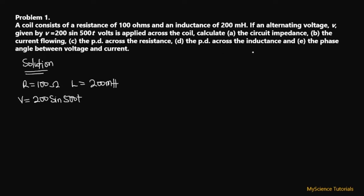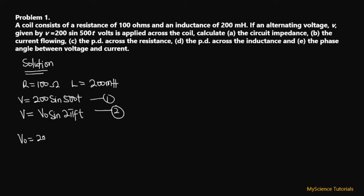In an AC circuit, the voltage given in that waveform is not the voltage we use directly — we use the applied voltage, the root mean square voltage. The general formula is V = V₀ sin(2πft). Comparing our equation V = 200 sin(500t) with this, we can see that V₀ = 200 volts and that 2πf = 500 radians per second.